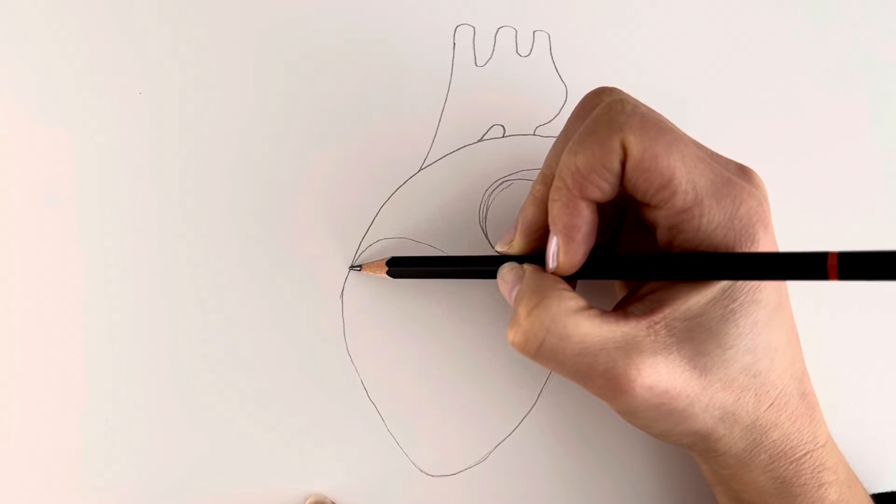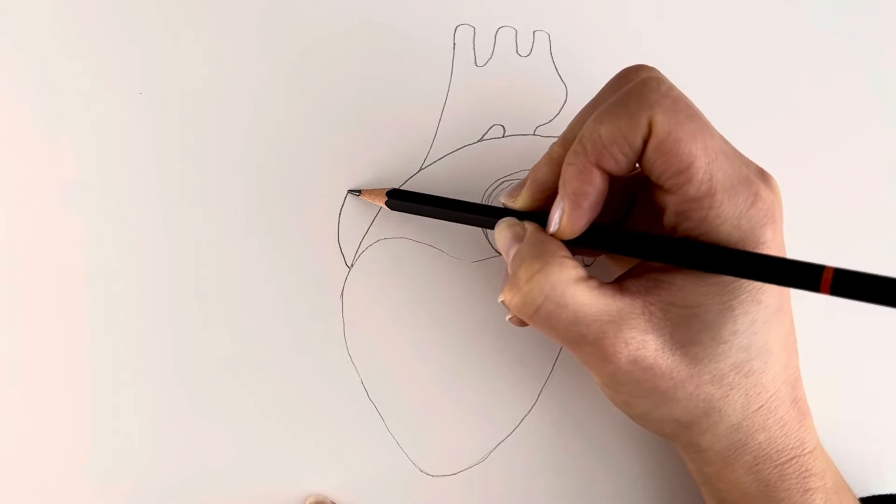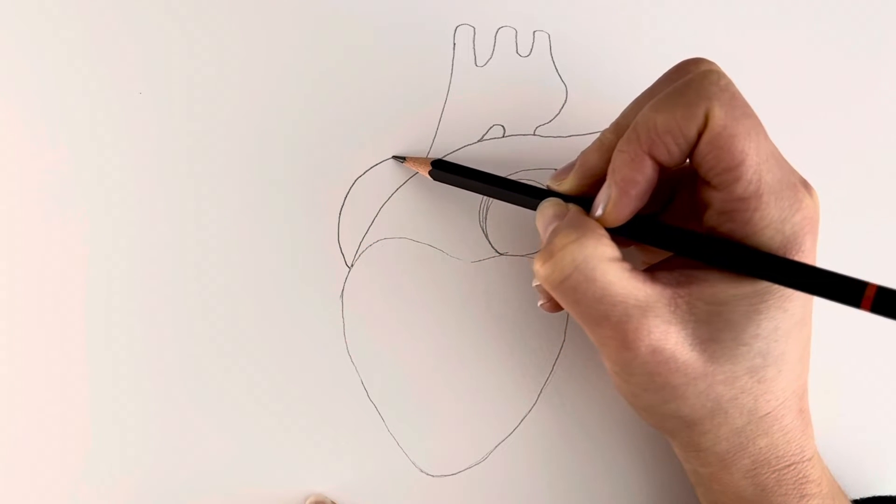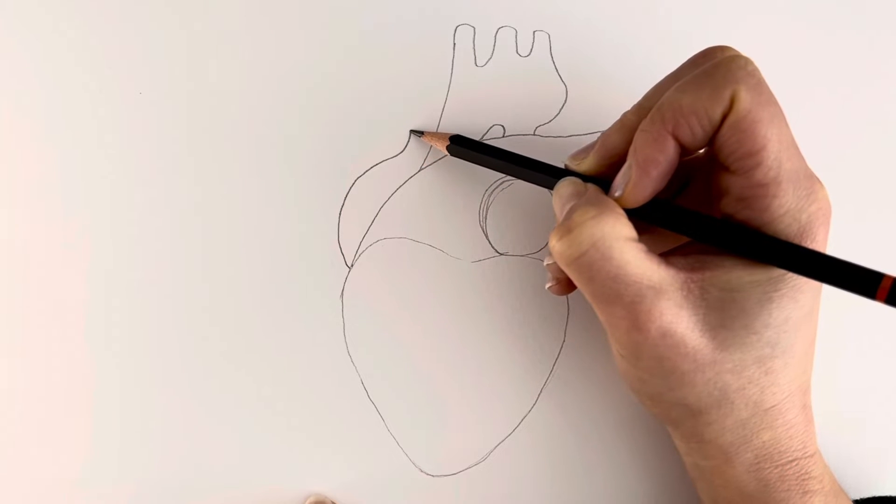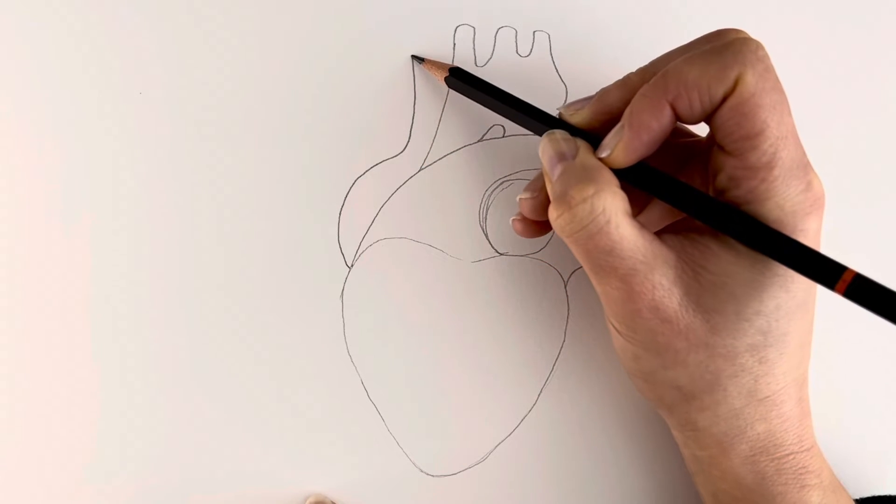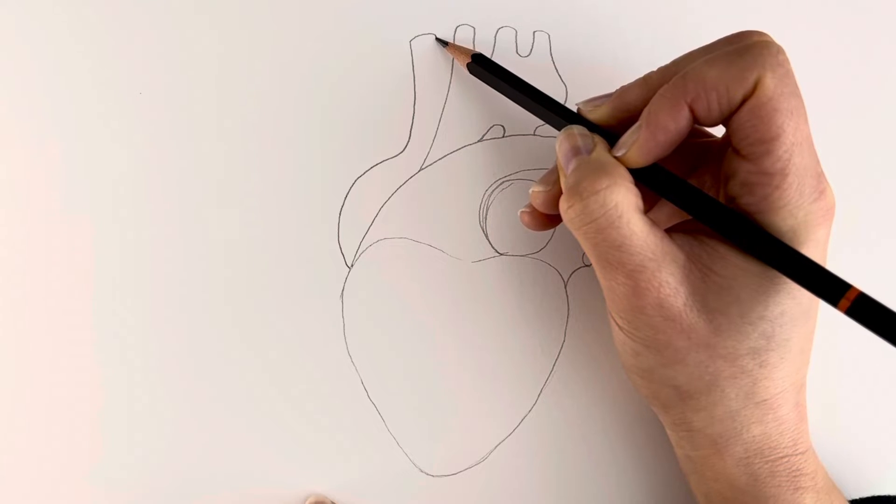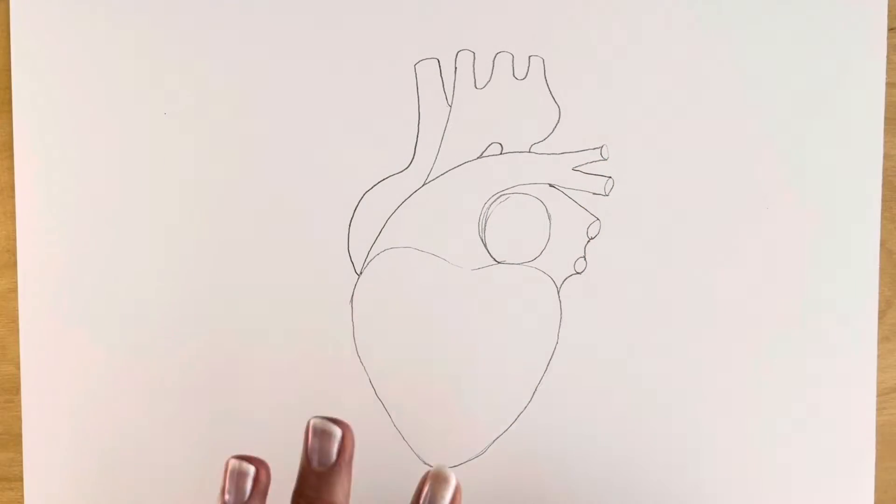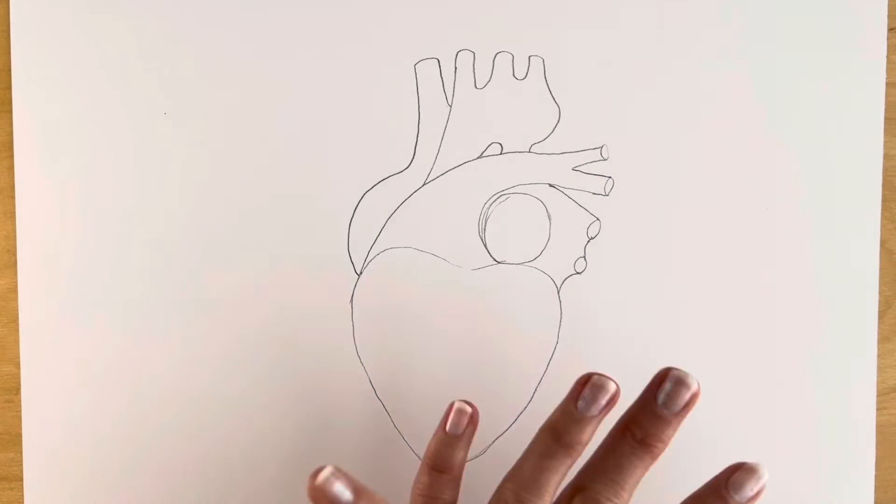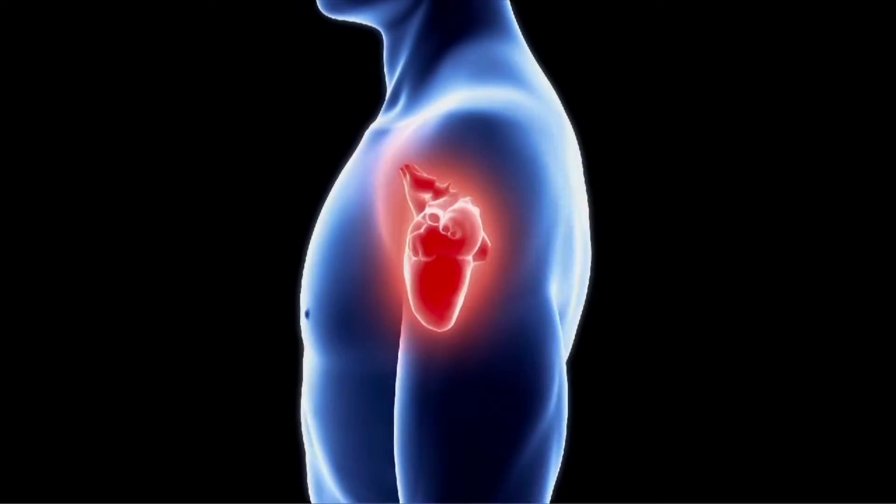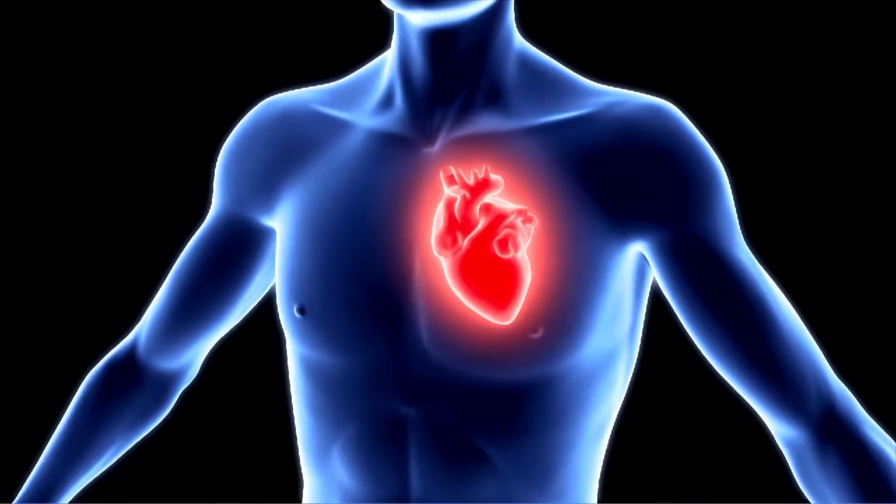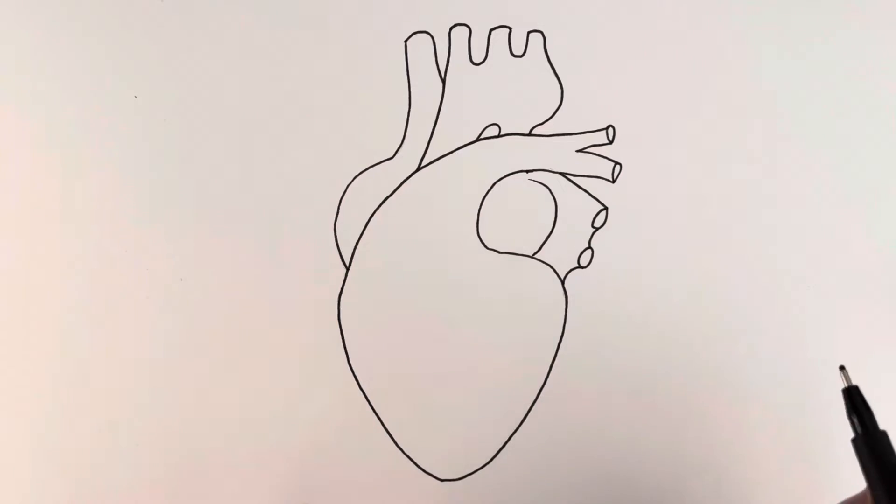Now for the right atrium starting here. Goes up and then this is called the vena cava. This one over here. Now let's go over this in pen and erase all the pencil marks. Okay, so I've erased all the pencil marks.